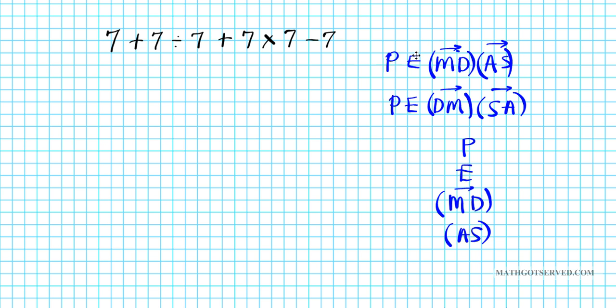So what the order of operation tells us to do is look for parenthesis or groupings first. There are none. We advance to exponents. There are none. But we have multiplication and division. So what we're going to do first is we're going to focus in on, let's use parenthesis for that, this one and this one.